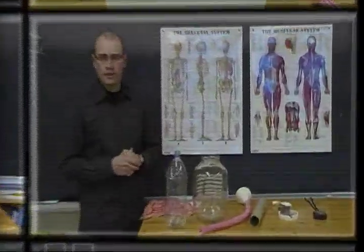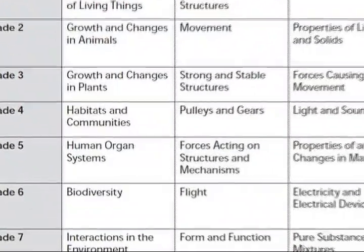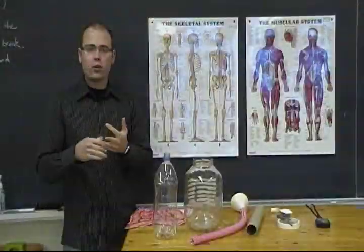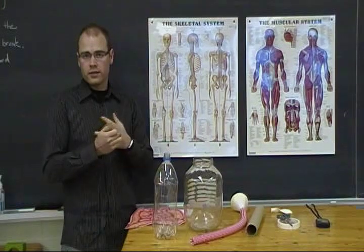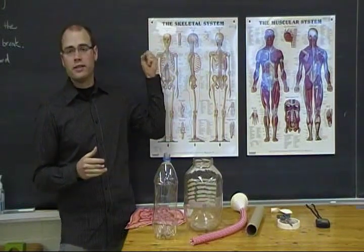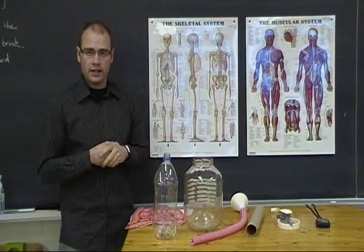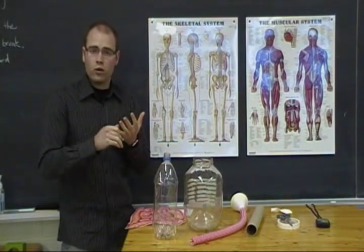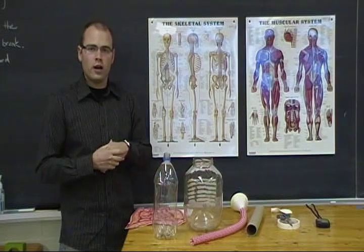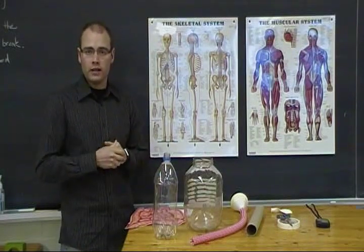In the Grade 5 Human Organ Systems Unit, we are going to be looking at the major components of the human body. These are the respiratory, circulatory and digestive systems. We also might take a quick look at the skeletal, the muscular and the nervous systems as well. We are going to be looking at the location, the structure and the function of these systems and how they interact within the human body.